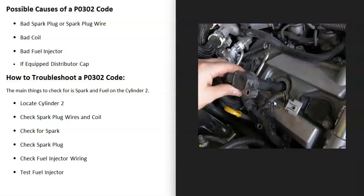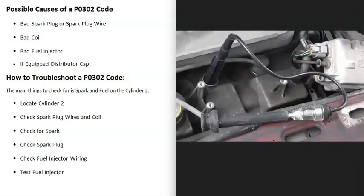If you have coils like this, you can swap it with another cylinder and see if the problem follows. For example, swap cylinder two with cylinder one. If you get a P0301 code, then you know that coil's gone bad.